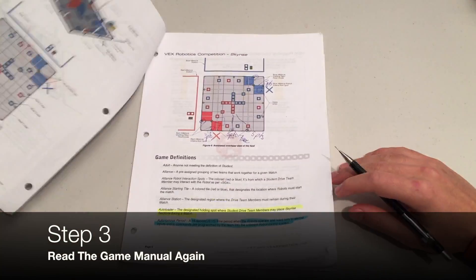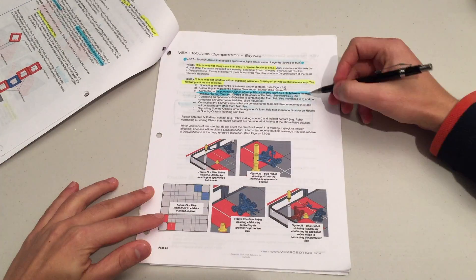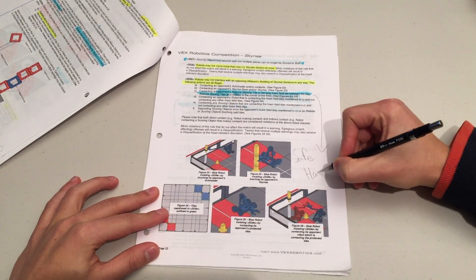Step 3: Read the manual again. This time make light annotations on the important aspects of the game, such as ways on how to score, as well as build restrictions.